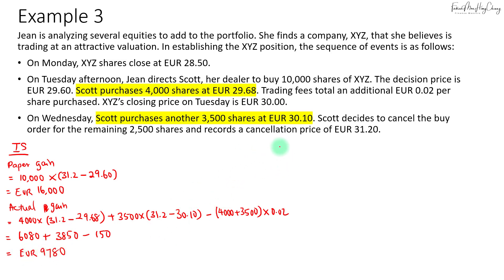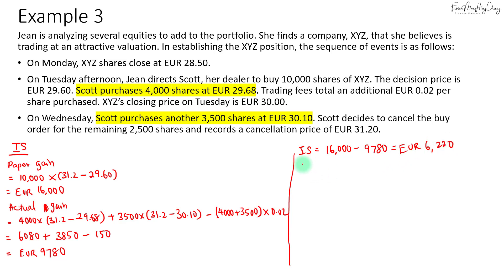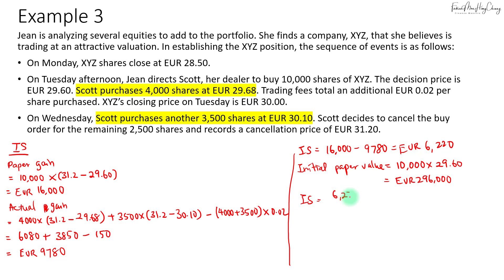To calculate the implementation shortfall, we take the paper gain of 16,000 minus the actual gain of 9,780, which gives 6,220 euros. Converting to basis points, we calculate the initial paper portfolio value: 10,000 shares multiplied by 29.60 equals 296,000 euros. So the implementation shortfall is 6,220 divided by 296,000, which equals 210.14 basis points.